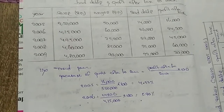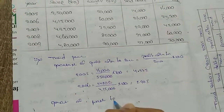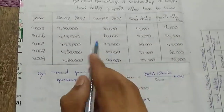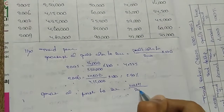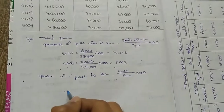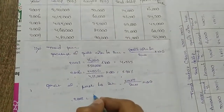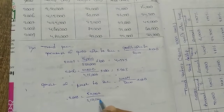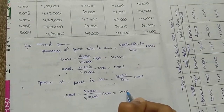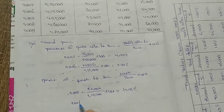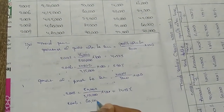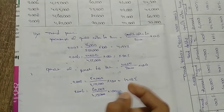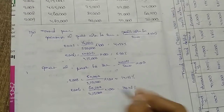For percentage of wages to sales: formula is wages divided by sales into 100. For 2005: wages are 50,000 divided by sales 3 lakhs 50,000 into 100 = 14.29%. For 2006: wages are 60,000 divided by sales 4 lakhs 15,000 into 100 = 14.46%. The same calculation continues for years 2007, 2008, and 2009.